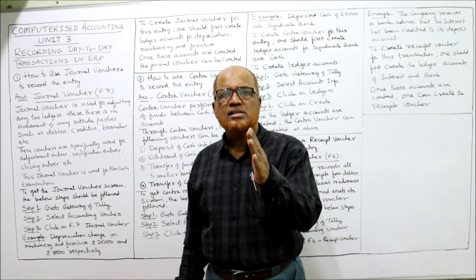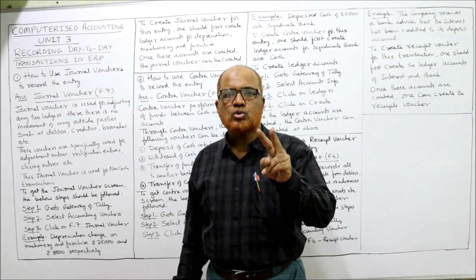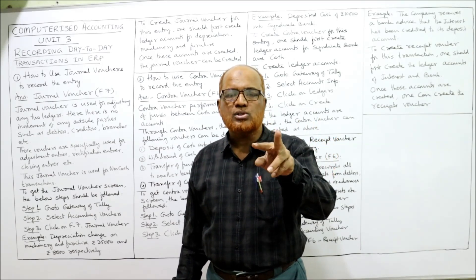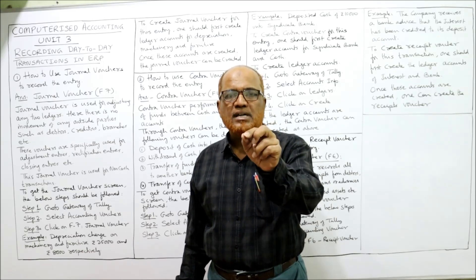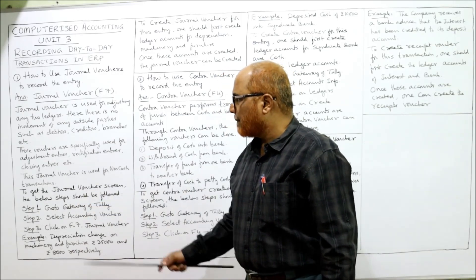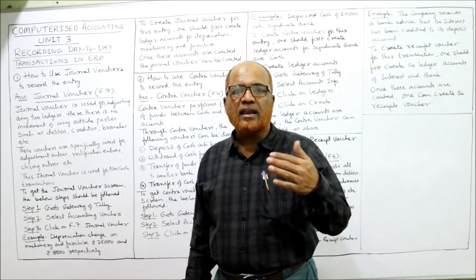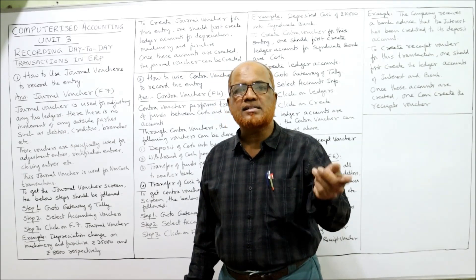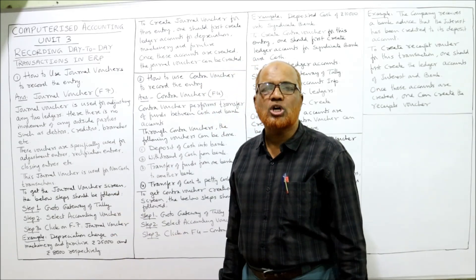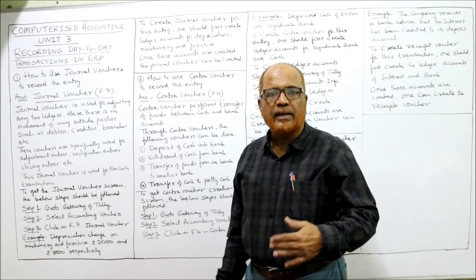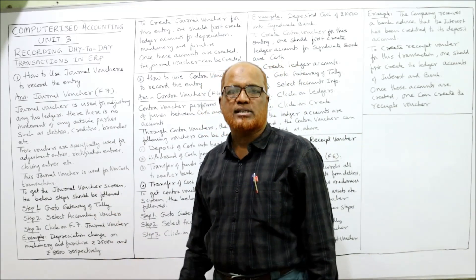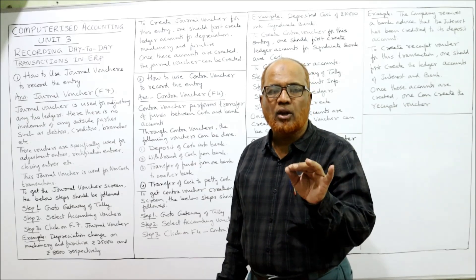A simple example is depreciation — a non-cash transaction in which two accounts are affected: the depreciation account and the asset account. These two accounts are adjusted through the journal voucher. Similarly, rectification entries to correct errors are passed through journal voucher, as are closing entries and opening entries. The journal voucher is used exclusively for non-cash transactions.